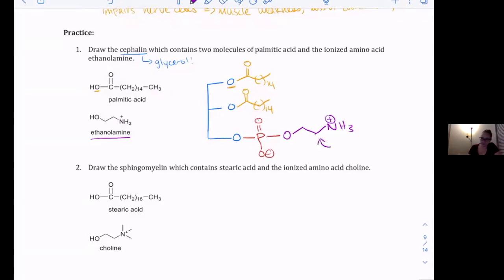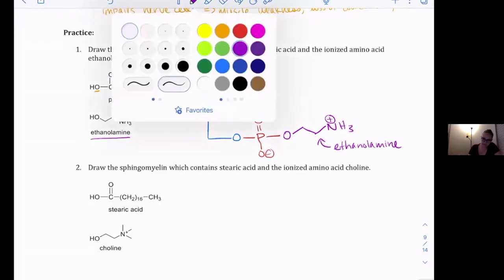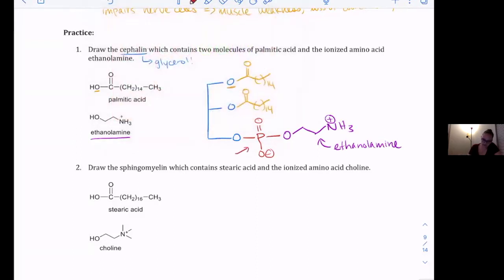So let's just go ahead and label everything for good measure so you guys know. We have our ethanolamine, we have our phosphate in blue, we have glycerol, and then in orange we have our palmitic acids.